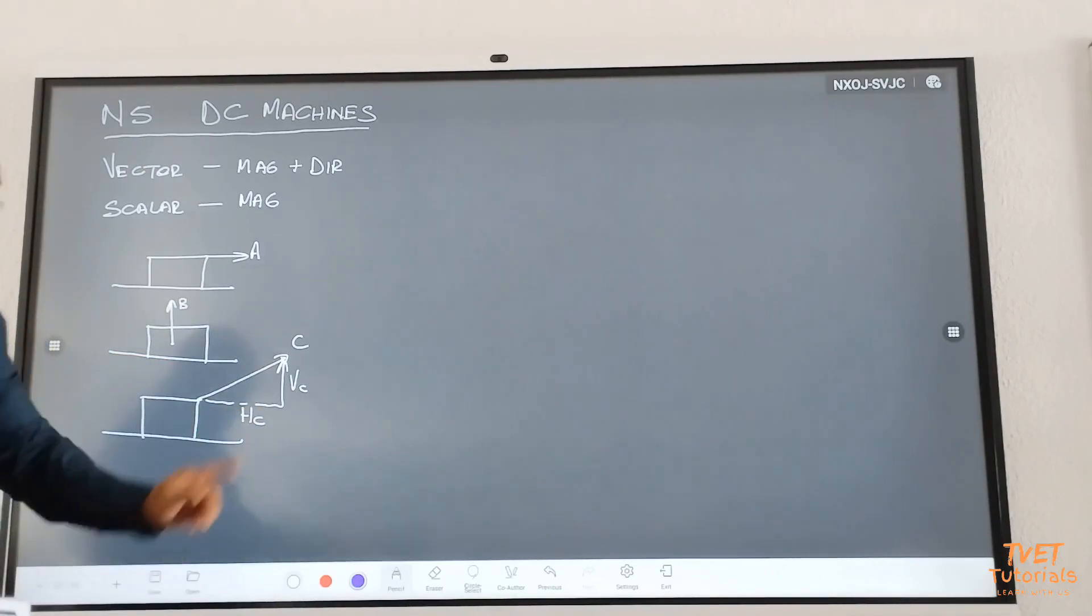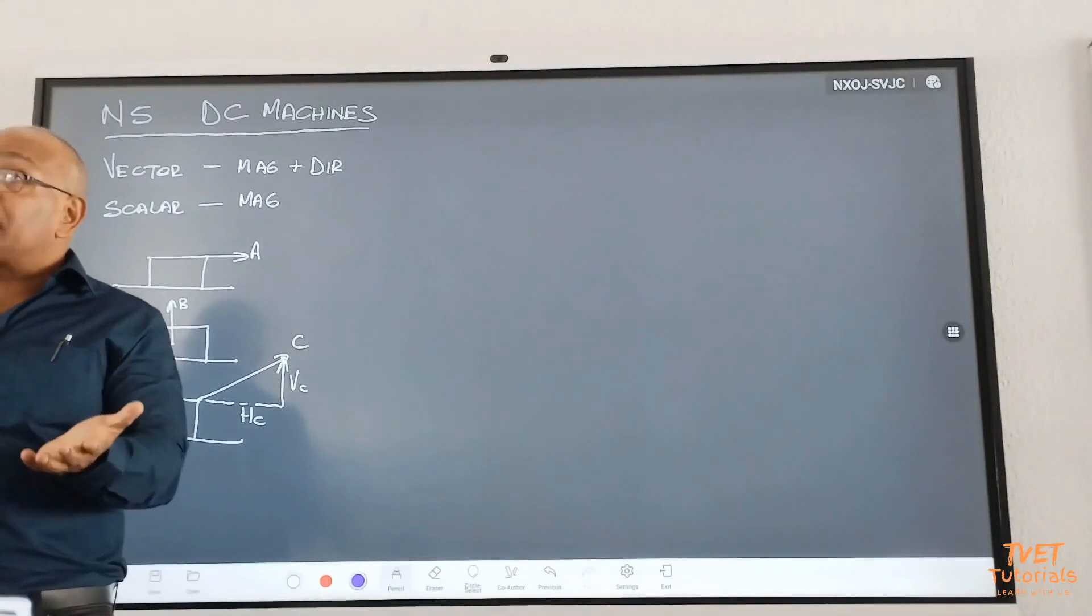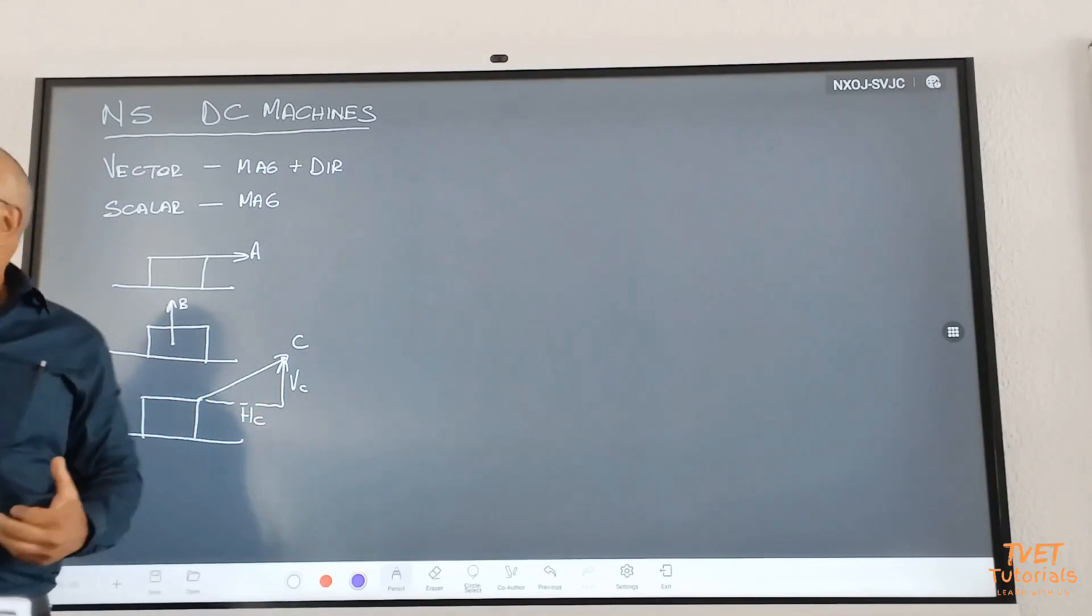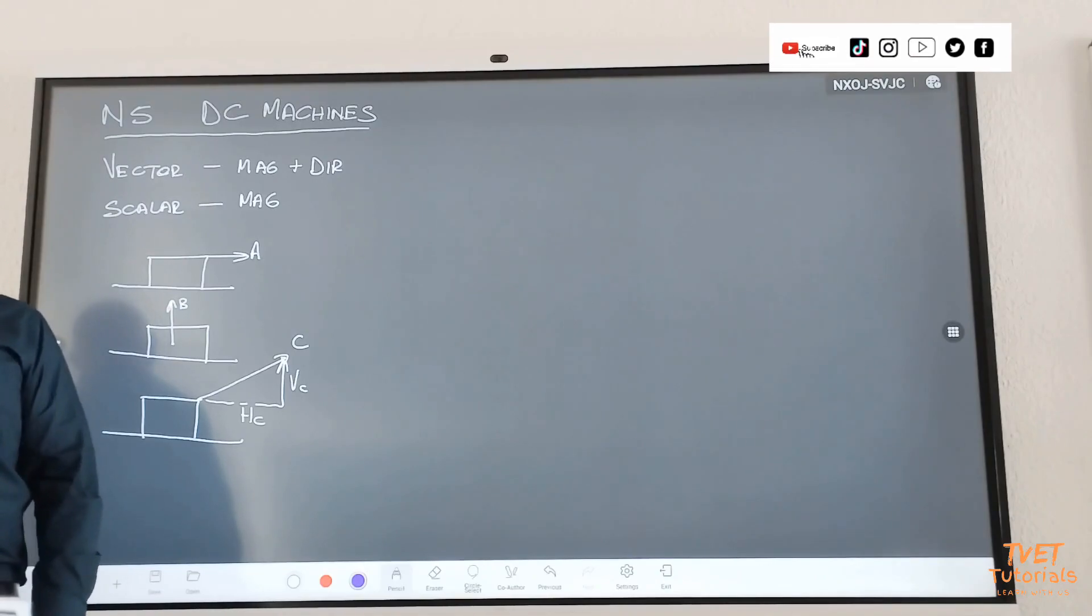You can't move. But here, the vertical component is responsible for lifting the block. What is the horizontal component responsible for? Motion. Do you all understand that?